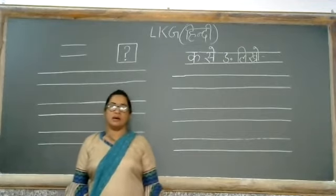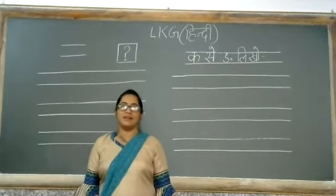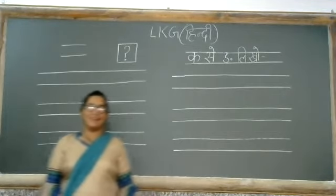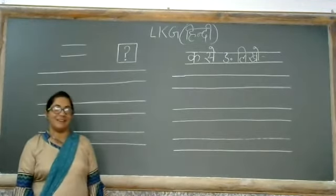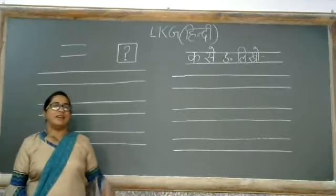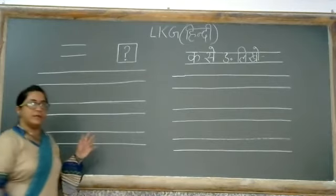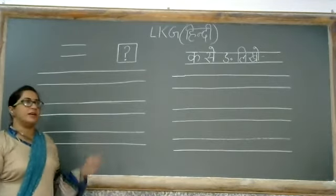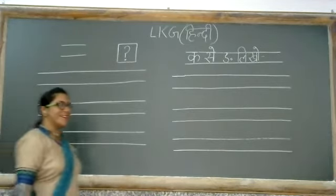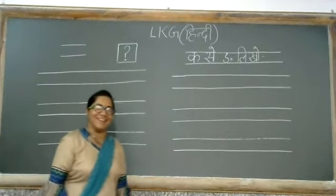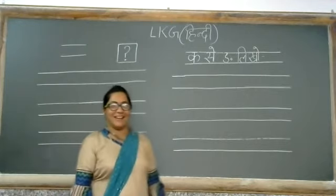Four letters: K, Kh, G, Gh. Next is our R. K, Kh, G, Gh, R.